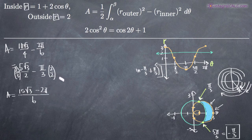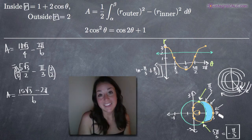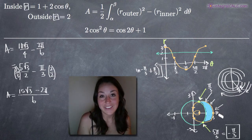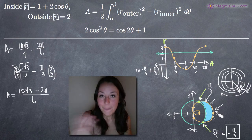And that is the area that is inside r equals 1 plus 2 cosine theta and outside r equals 2, which is the blue shaded region shown on the graph. I hope this video helped you and I will see you in the next one. Bye!